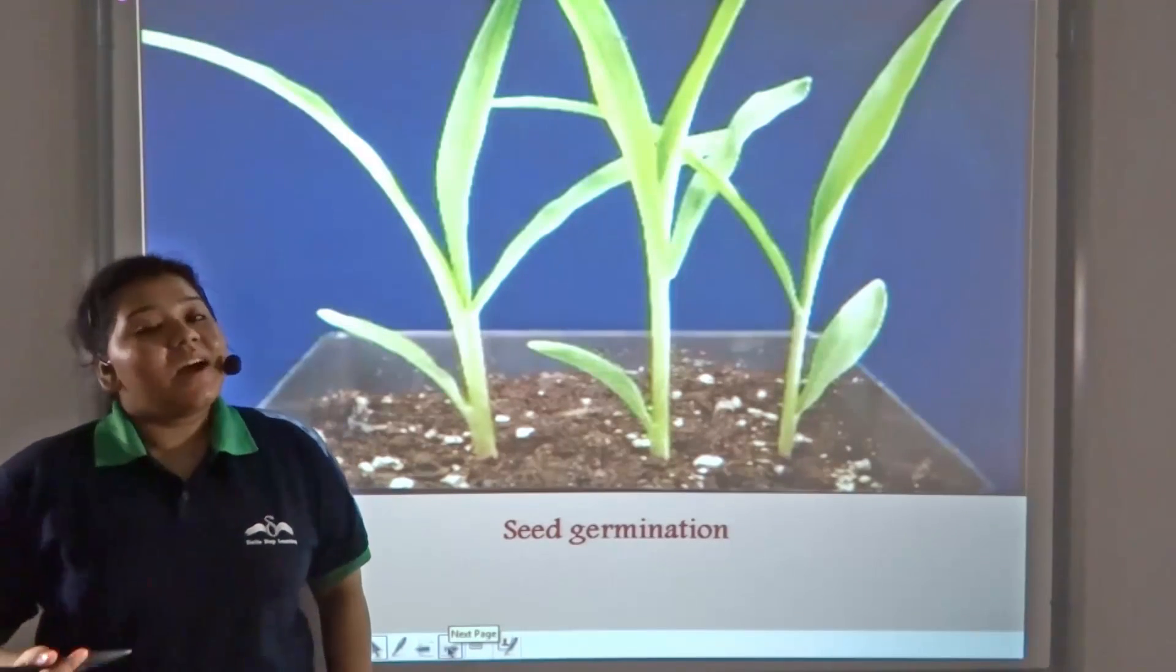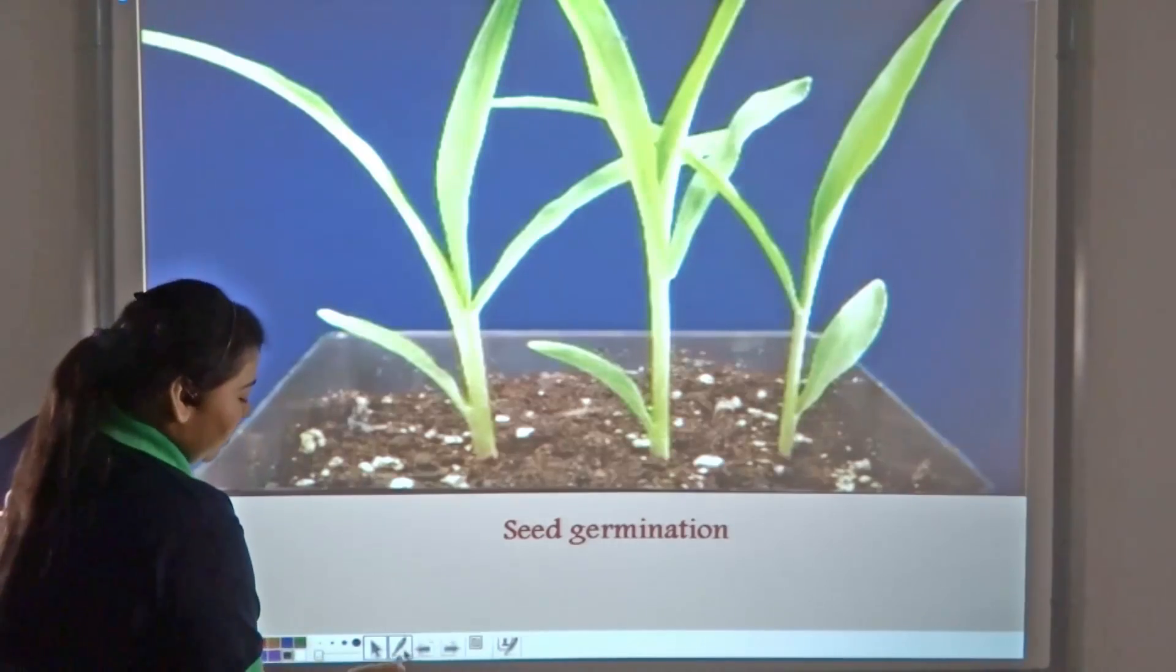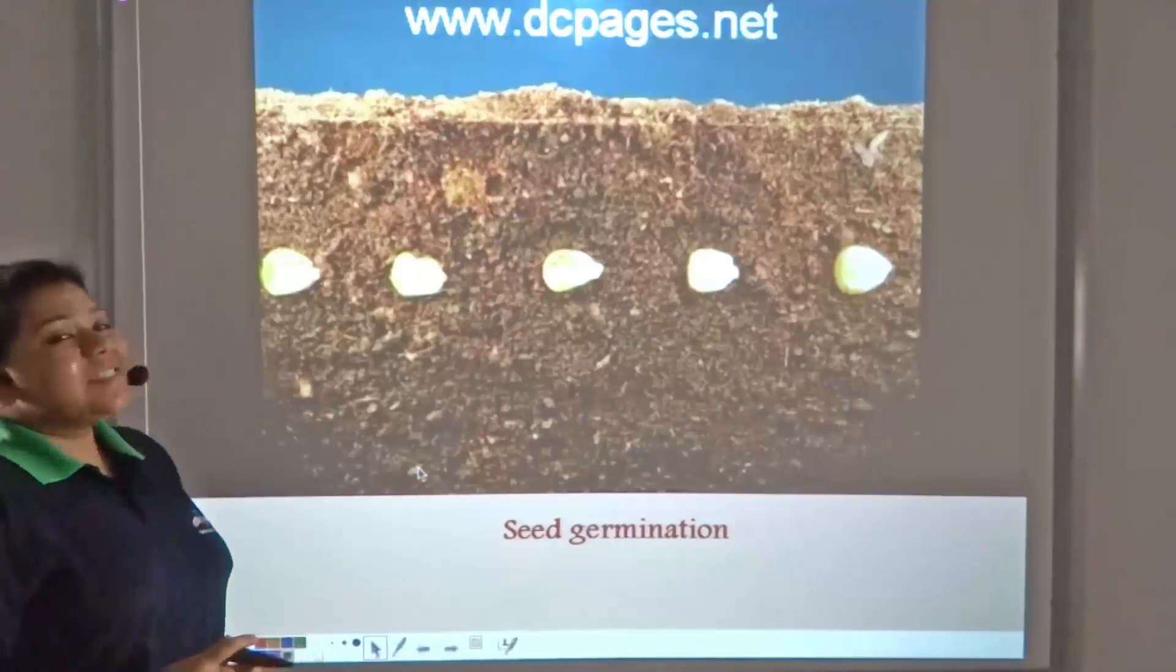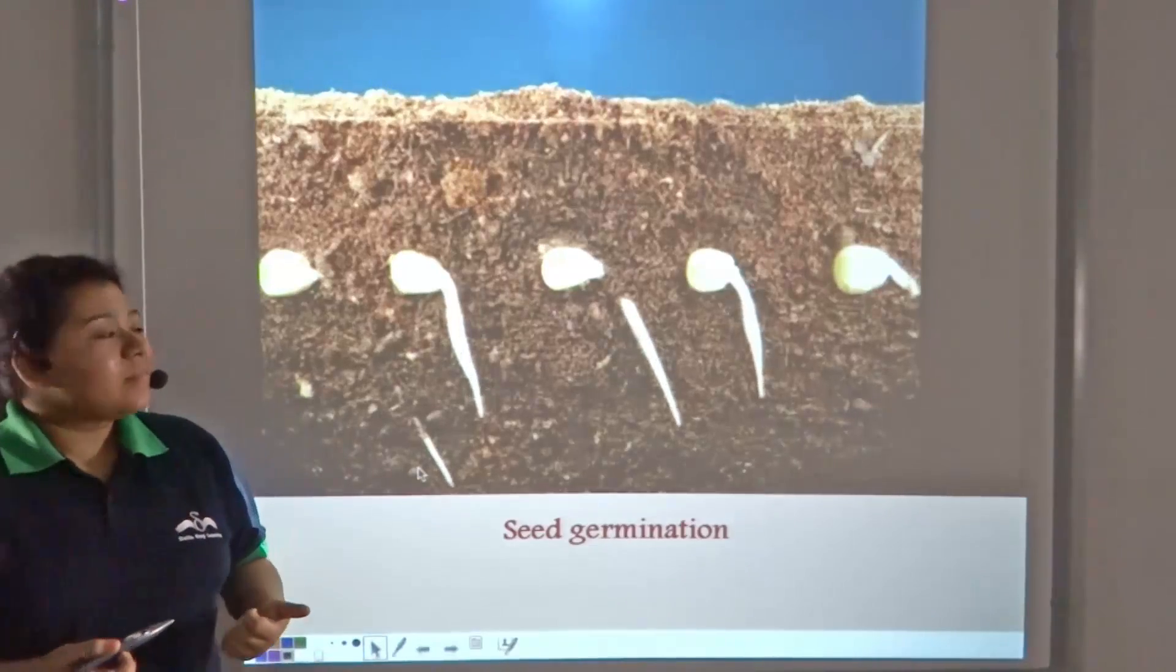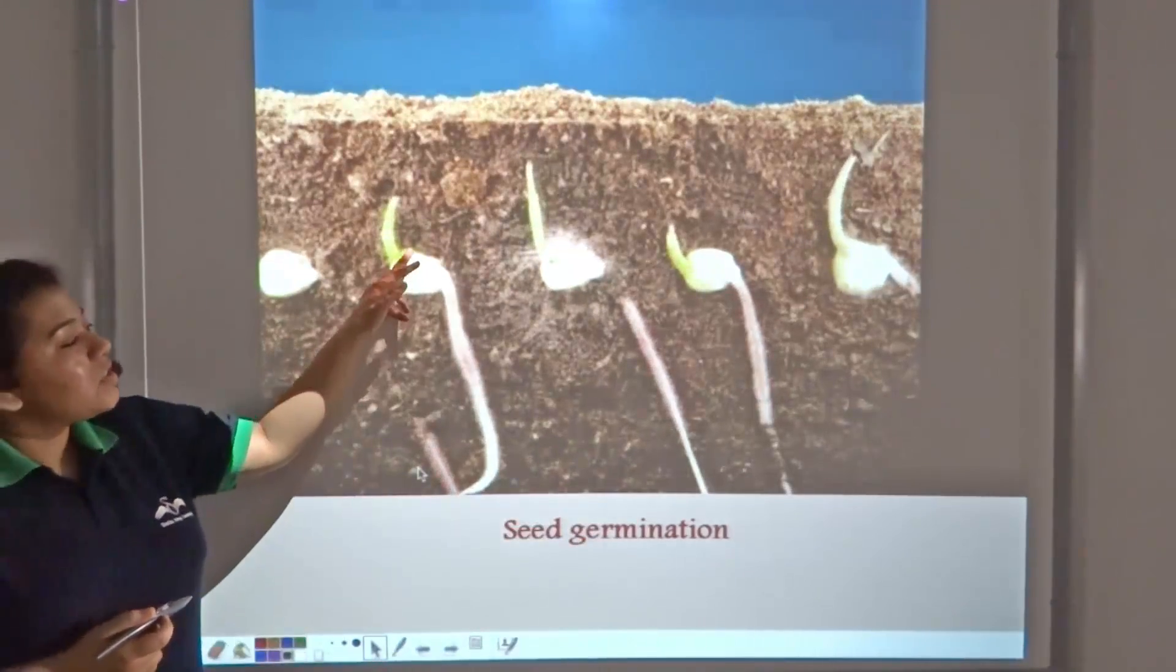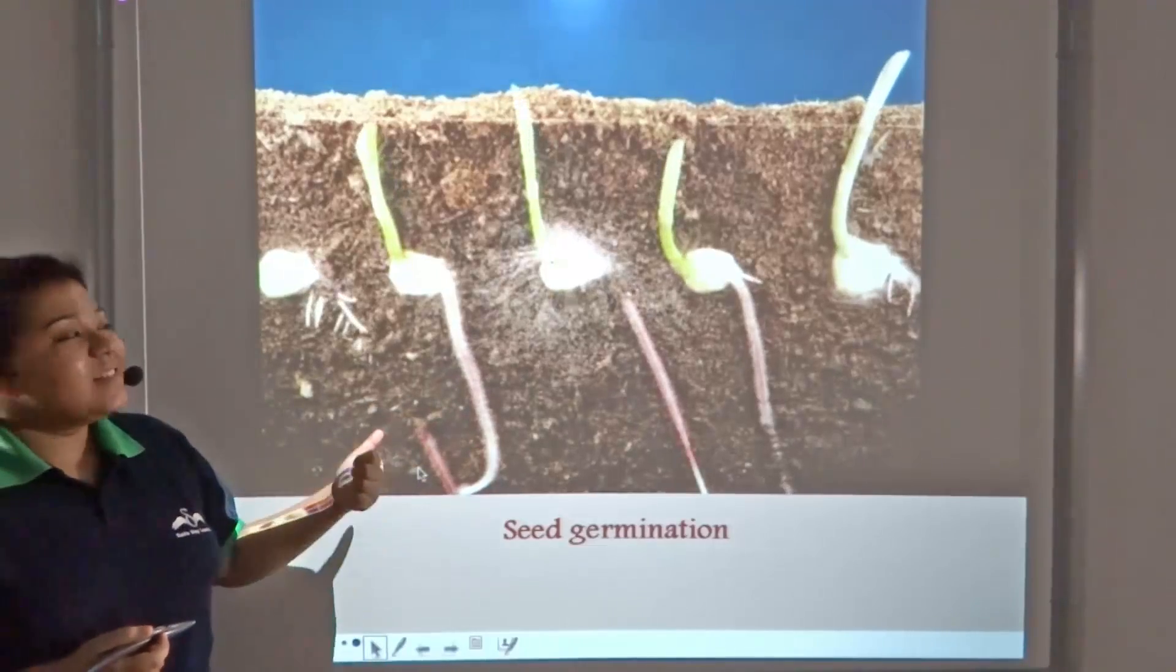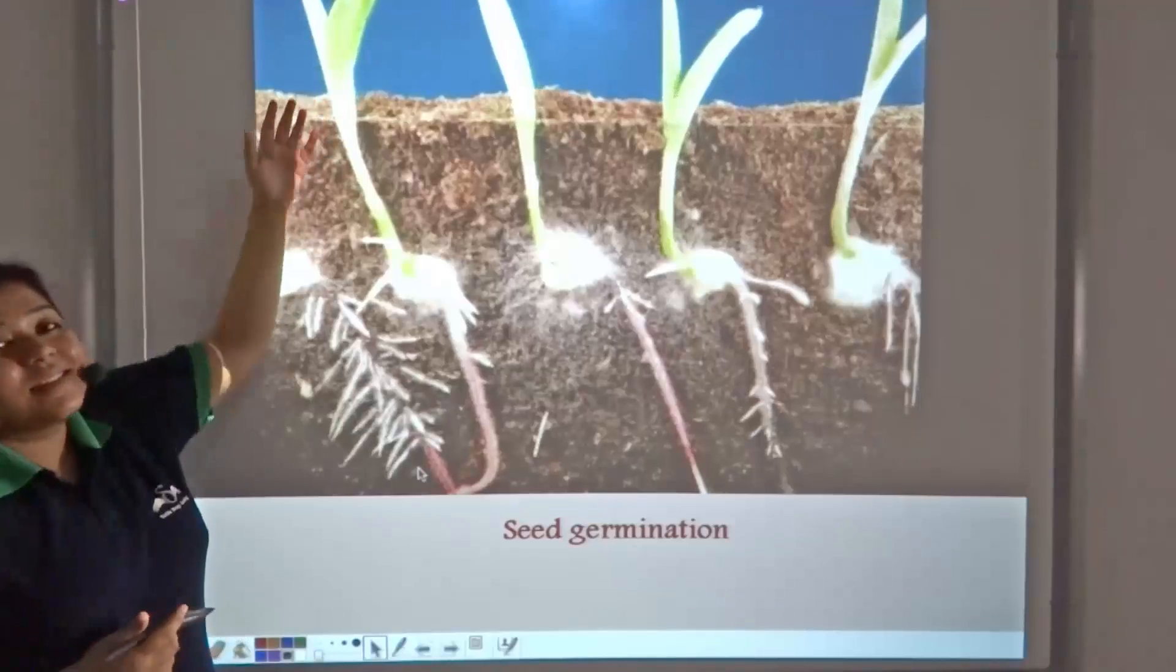Other kinds of movement are also seen in plants, like when the embryo present in the seed grows to form a new plant. During seed germination, roots grow towards the soil and stems grow away from the soil towards the light.